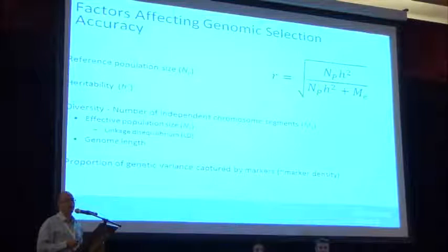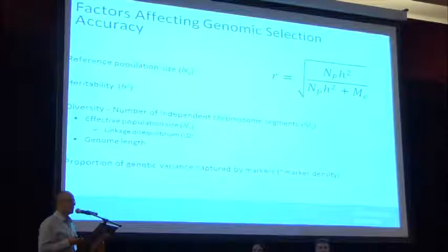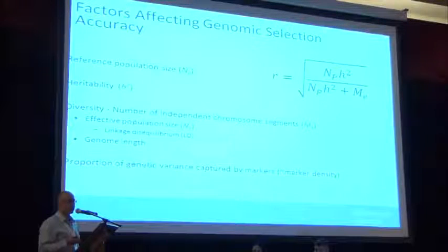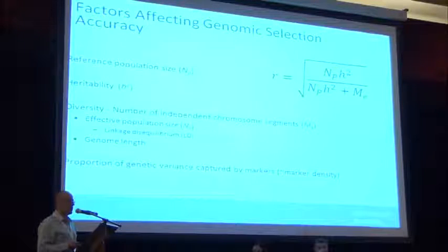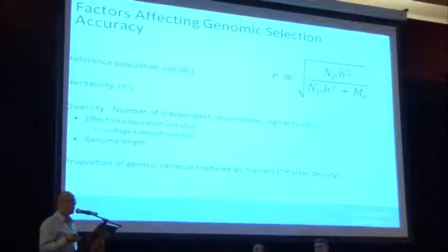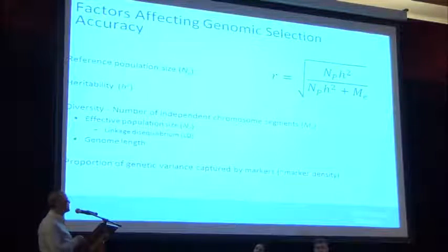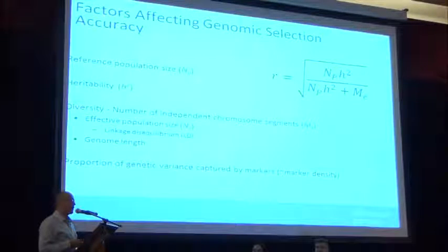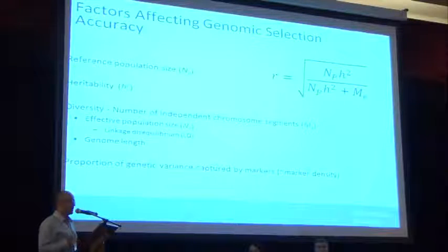There are several factors affecting the accuracy of genomic selection, denoted R. The biggest parameter is the size of the reference population — the number of individuals with both phenotypes and genotypes. More individuals means higher accuracy. The second parameter is heritability h-squared: higher heritability gives higher prediction accuracy. The third, which I'll concentrate on today, is this diversity measure ME — the number of independent chromosome segments. Many small segments means high diversity; long chromosome segments means low diversity.